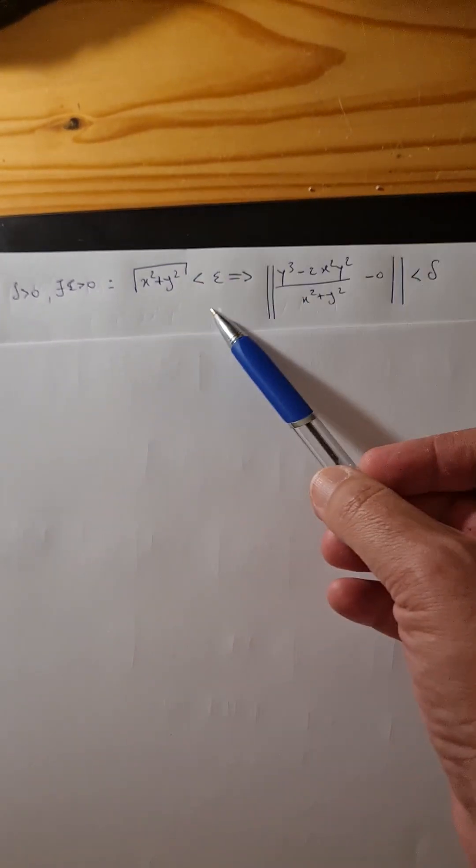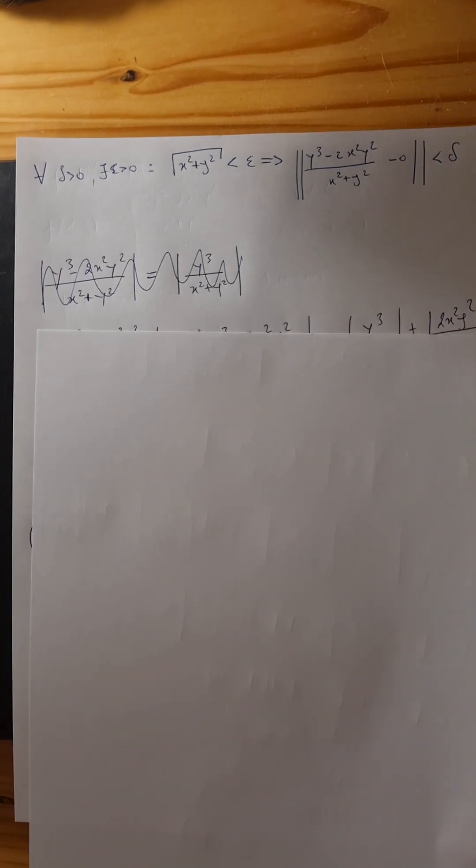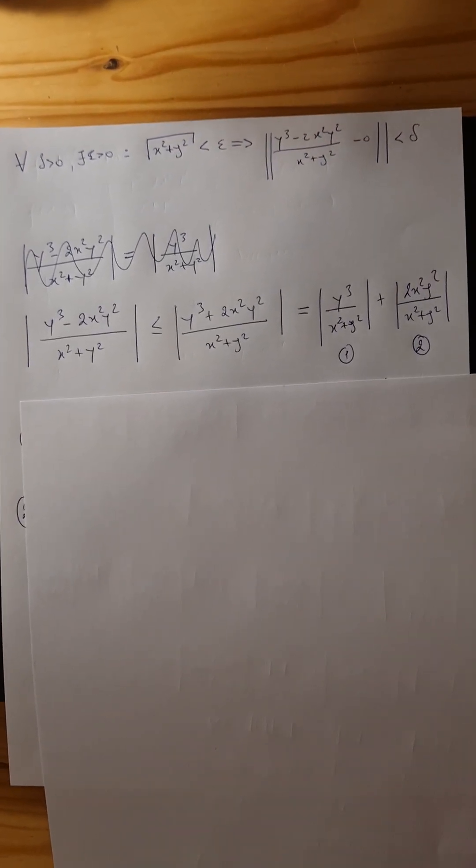For all delta, I did not forget the epsilon this time. This is the function, this is the definition. We are going to use epsilons and deltas. Some mistake here, forget it. So we get this: y minus 2x².